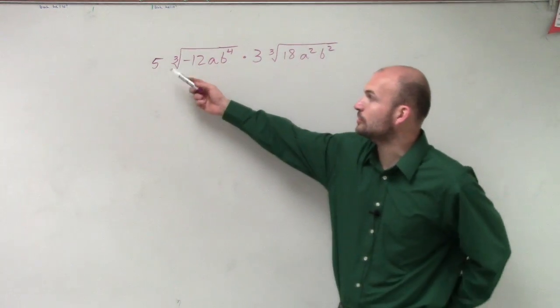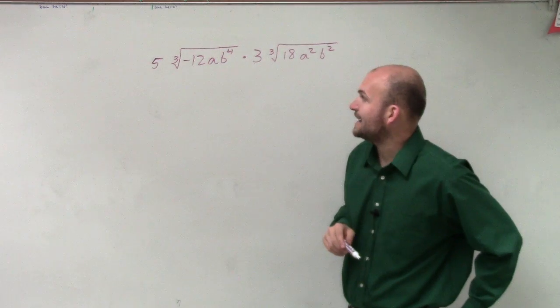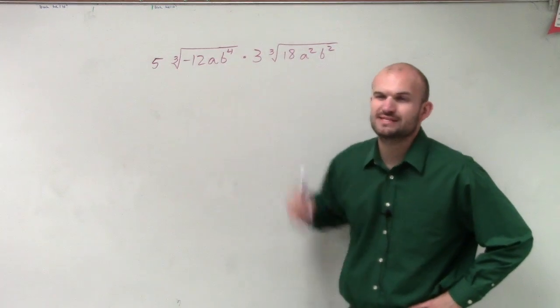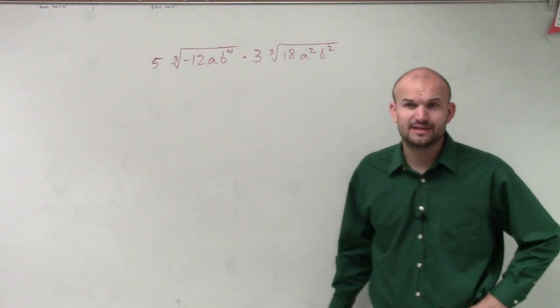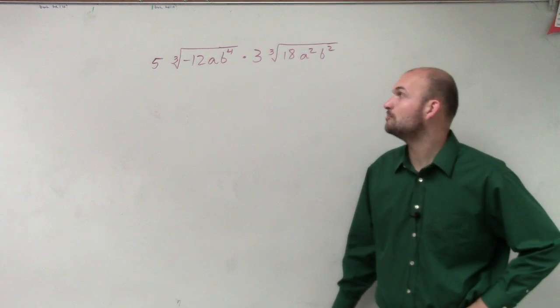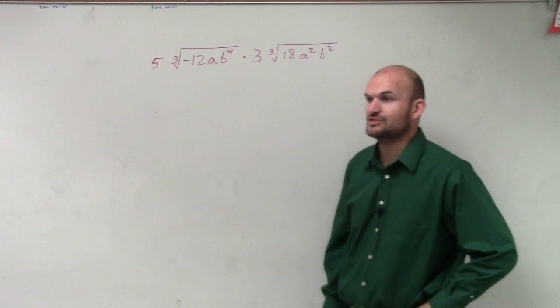So we're taking the third root of negative 12 of a times b to the fourth. Can we simplify any terms inside of that radical? If you can, then you want to break it up. Can you write 12 to a third power? No. a to the third? No. b to the fourth to the third? No. And then we look in here. Can you write any of these to the third power?